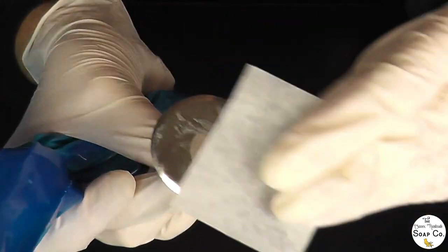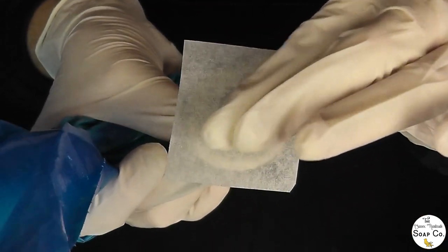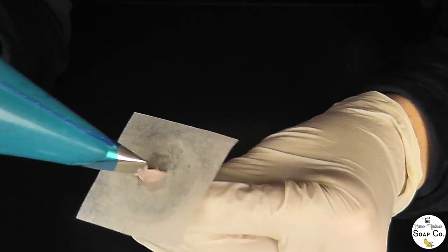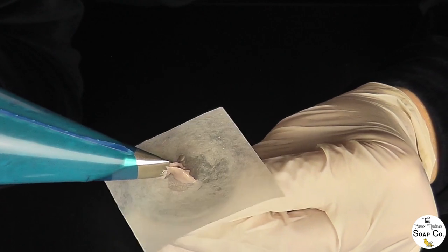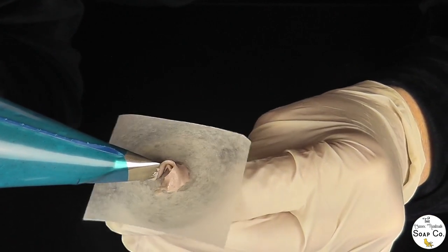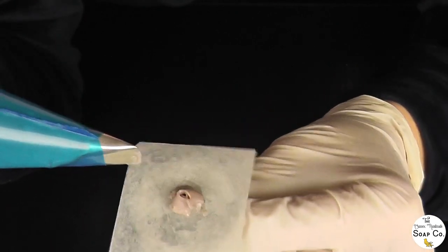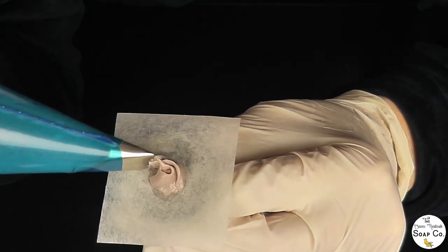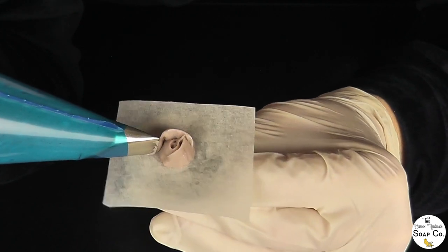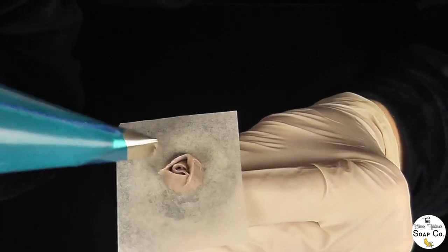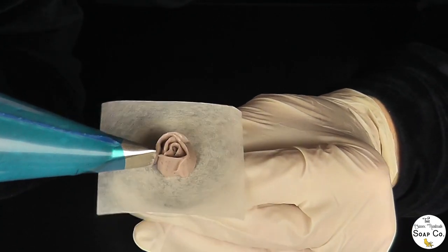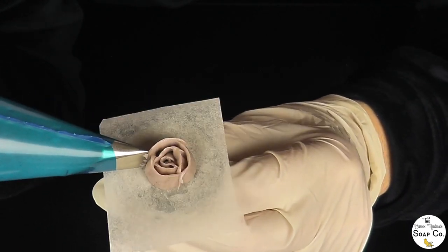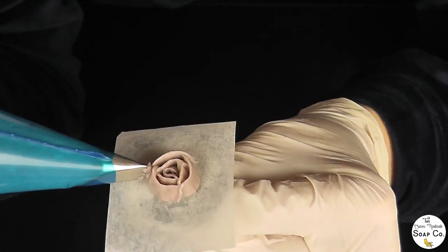So that was definitely the hardest bit with the piping. To begin with I popped a little greaseproof paper square onto a cake nail and I put a little blob of batter in the centre. And then I created a little central bud by just swirling round like so. And then I needed to form the petals so I just did three petals around the centre of that central bud like so. And then I just carried on piping petals around the rose until I was actually happy with the size of rose that I had created.